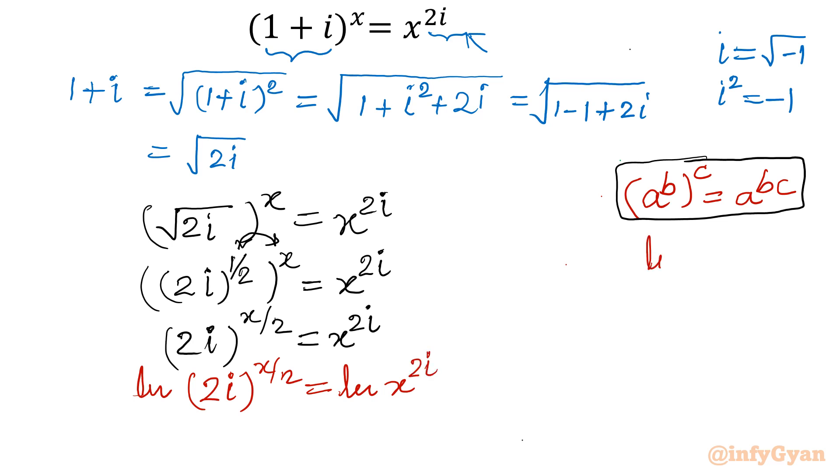I will write ln of 2i raised to the power x by 2 equal to ln x power 2i. Now second property: ln a power b, that would be equal to b ln a we will use. This power come down as a multiplier. So I will write left-hand side as x by 2 ln 2i and right-hand side will be 2i ln x.